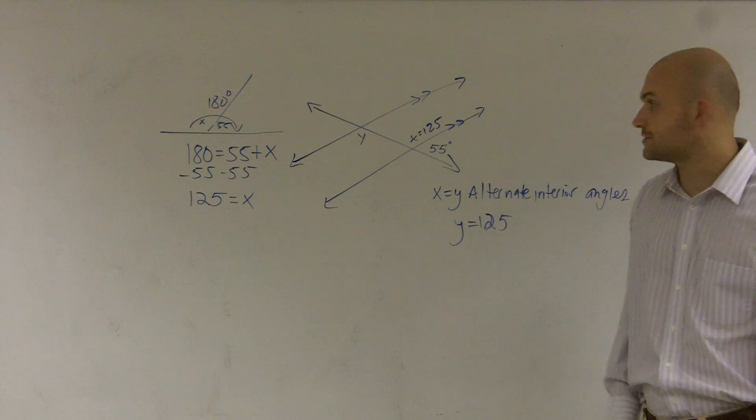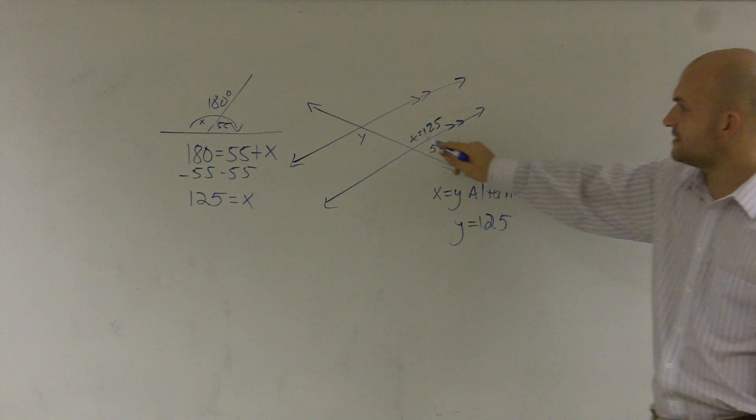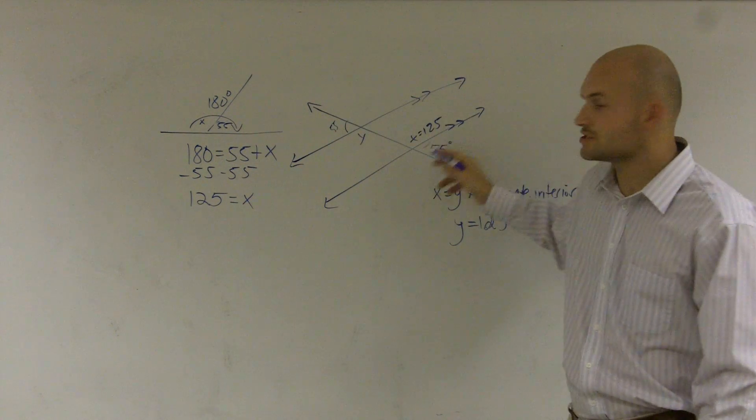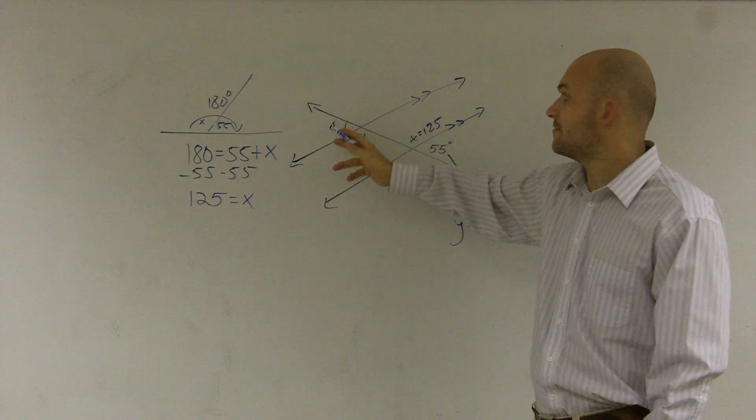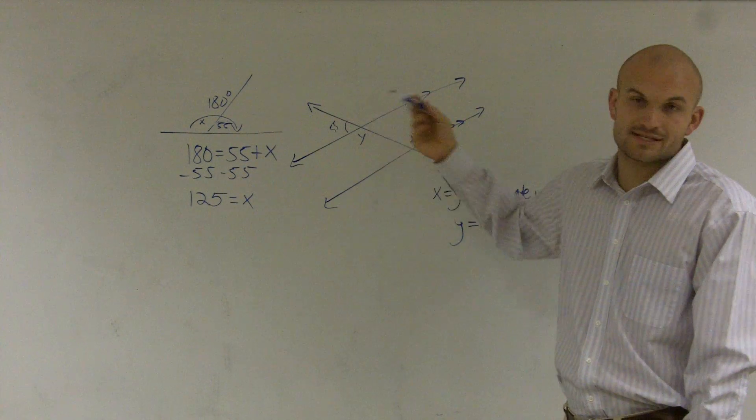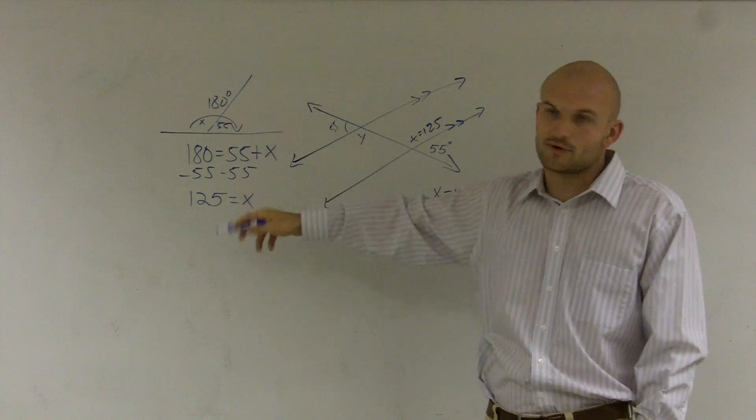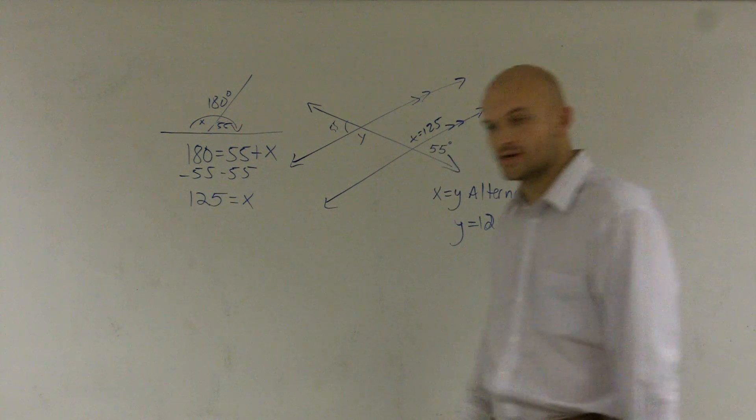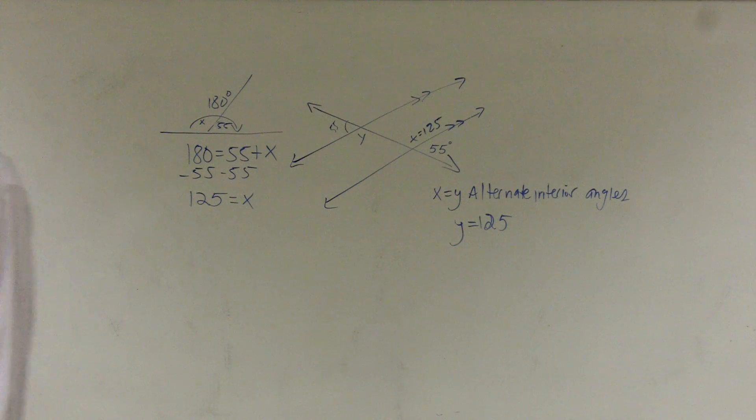All right, one last way I can do this is you can also say 55 and this angle right here are what we call alternate exteriors. So we know that they're equal to each other. Then you could say that 55 and y are, again, supplementary, and do the exact same equation. You get y would equal 125. So that's how you do it with parallel lines and the transversal.